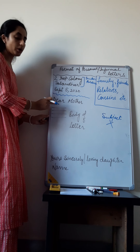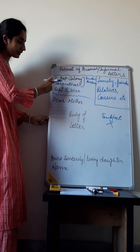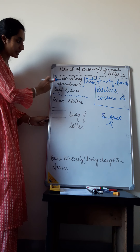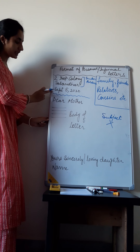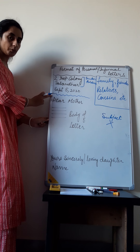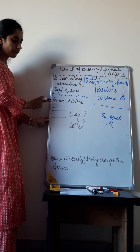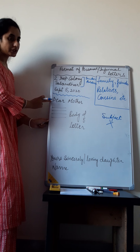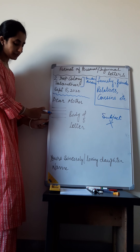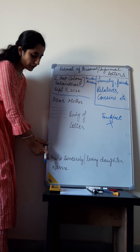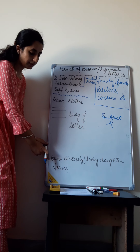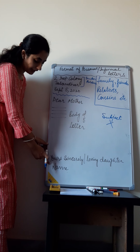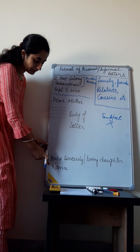In formal letters we just write 'sir' or 'madam.' Other things remain the same: sender's address, date, drop one line, salutation starting with 'dear,' body of the letter, and at the end your sincerely or words like 'your loving' — loving daughter, lovingly — and then you write your name.